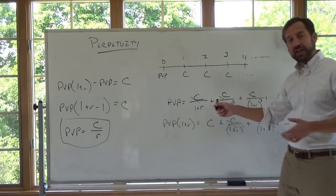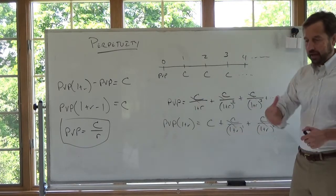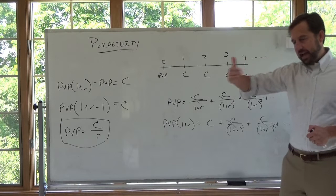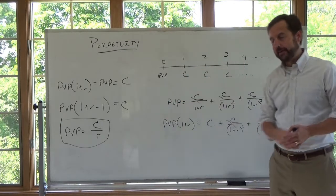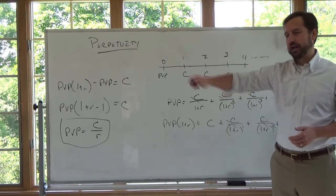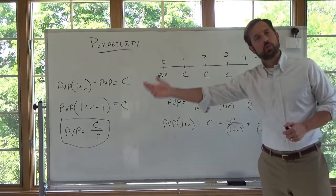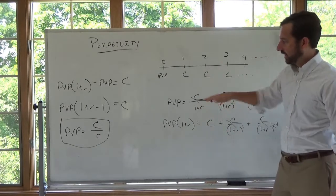Again, if you discount each individually, you have to go out far enough that adding the additional term does not affect your sum. Remember, if you're going out to a penny, I just have to push it out so that adding an additional term might add 0.00001 or something like that. And then you're going to get the same answer.